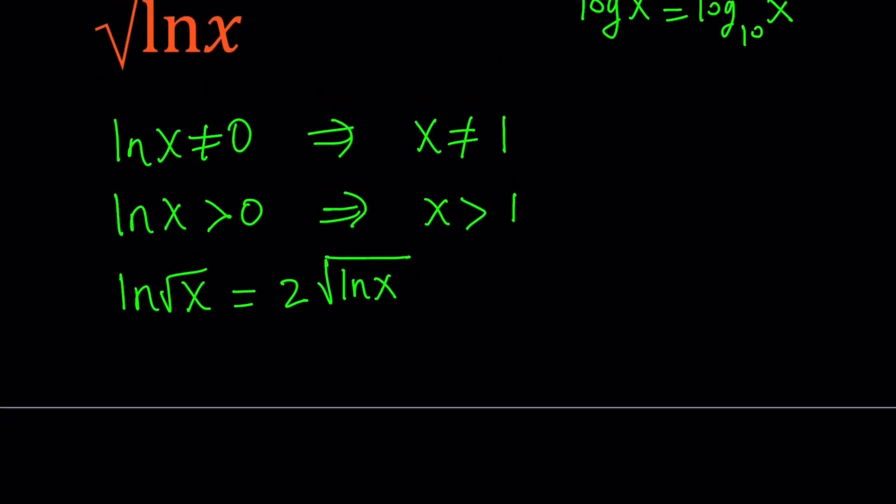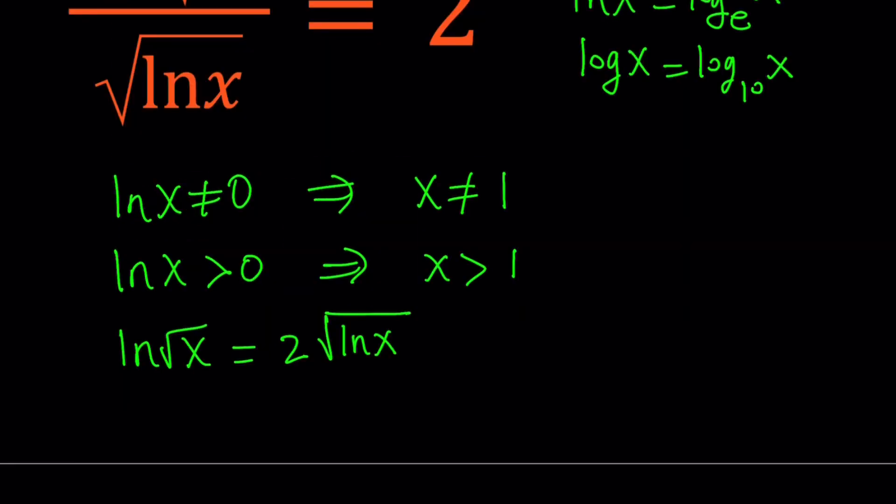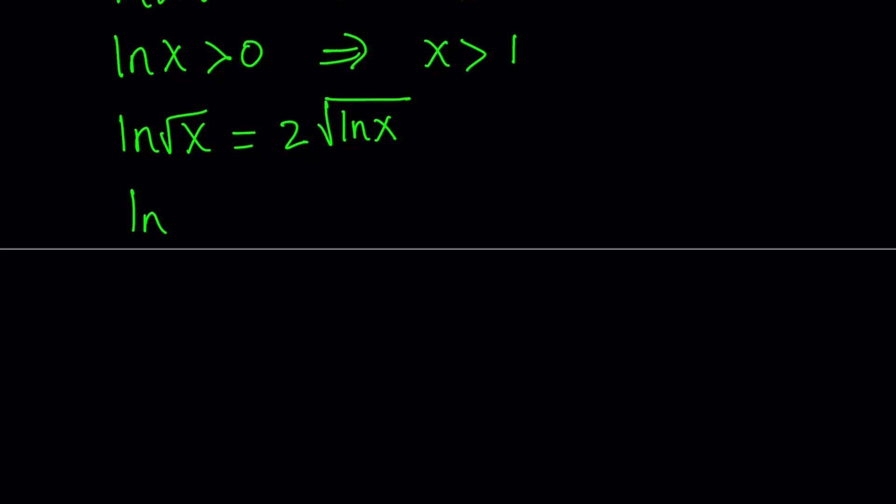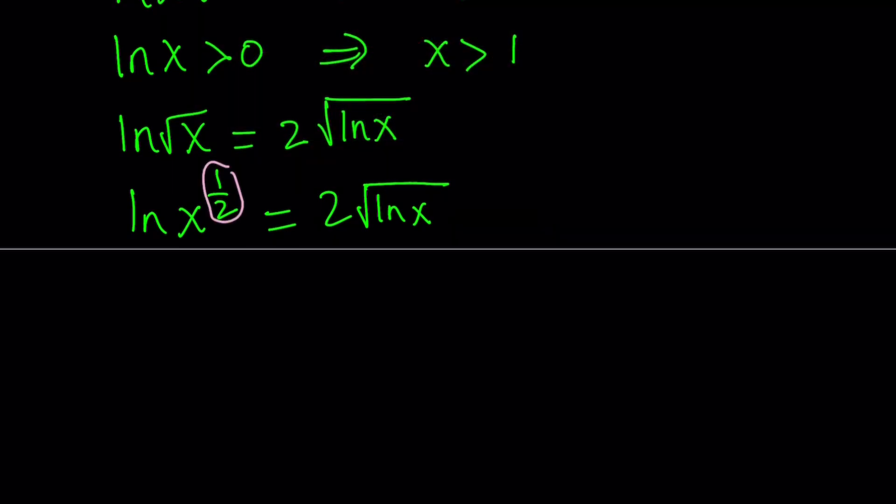So after we get to this point, we can go ahead and use properties of logs, such as square root of x can be written as x to the power of 1 half. So let's go ahead and do that. 2 times the square root of ln x. And then this 1 half can be moved to the front since it's a power and we have the log in front of it. So we can write this as 1 half multiplied by ln x equals 2 times square root of ln x.